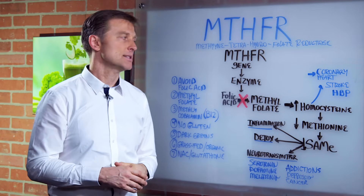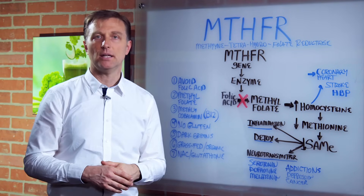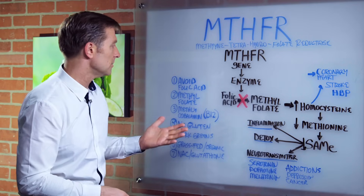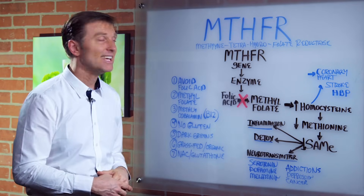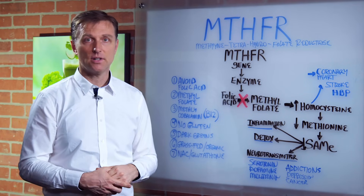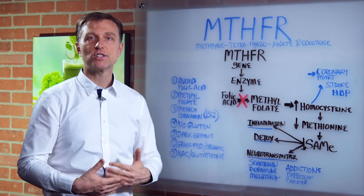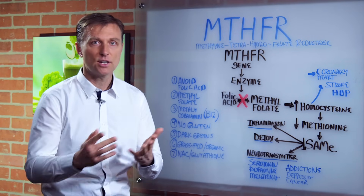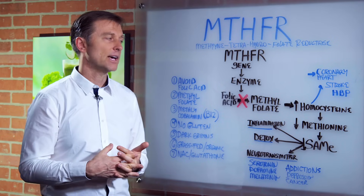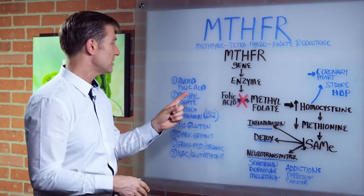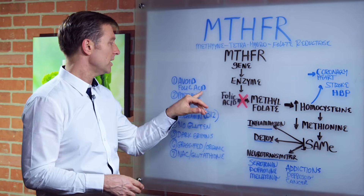You should go get tested. The remedy is very simple. You need to avoid taking folic acid because it can build up — it's not converting. That would be in all the enriched foods that you shouldn't be eating anyway, like the grains. So you've got to look down the list and see what foods have folic acid and avoid that.